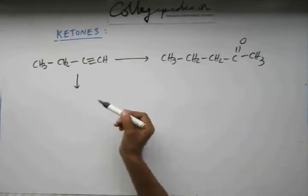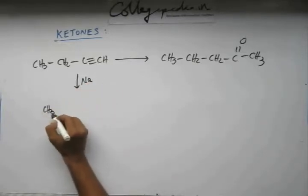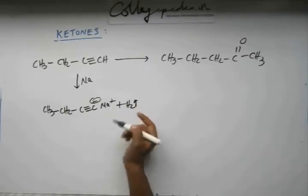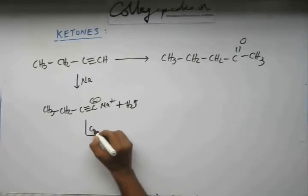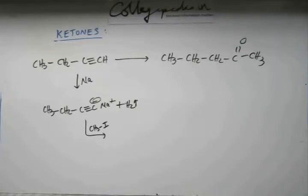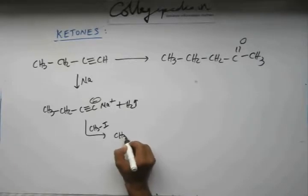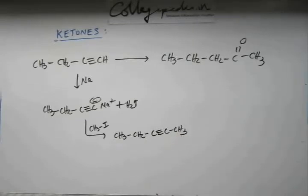Step 1: removal of the acidic hydrogen. That can be done in various ways — either you add a base, or you add an active metal like sodium. When you add sodium, hydrogen gas is released along with the main product. Step 1 is over. Step 2: add methyl iodide (iodomethane). Iodine is a very good leaving group, so in an SN2 reaction, the nucleophile pushes iodine out, and you get 2-pentyne.